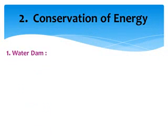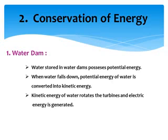The first conservation example is a water dam. In a water dam, water is stored. We store water in the dam so it can be released when needed. When water is released from the water dam, that is conservation of energy. The water stored in the dam has potential energy.